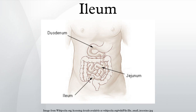Disturbance of this sensitive balance is not uncommon and is one of the causes of colic in horses. During any intestinal surgery, for instance during appendectomy, the distal two feet of ileum should be checked for the presence of Meckel's diverticulum.